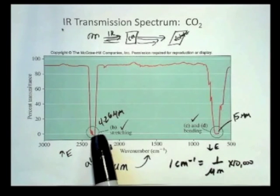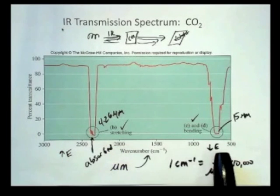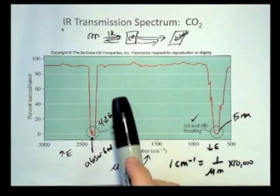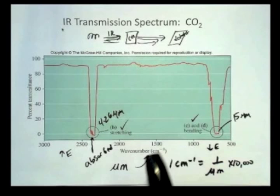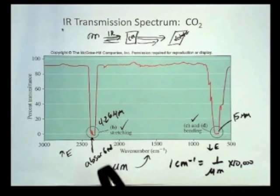Bottom line is that carbon dioxide, this is evidence that carbon dioxide does indeed absorb infrared radiation. This is the transmission spectrum from the IR spectrometer. And there's two major regions of absorption, one due to the stretching, the asymmetric stretch, and another one due to the bending.